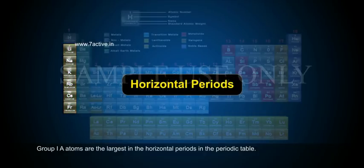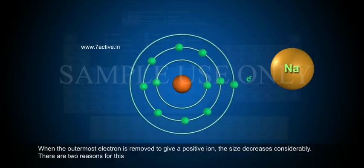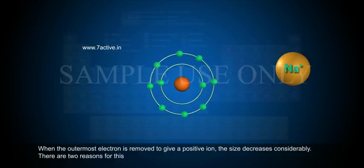Group 1A atoms are the largest in their horizontal periods in the periodic table. When the outermost electron is removed to give a positive ion, the size decreases considerably. There are two reasons for this.